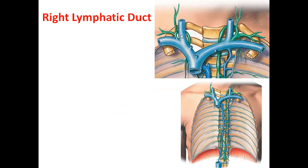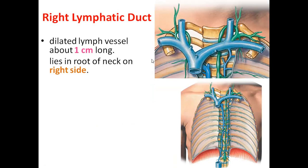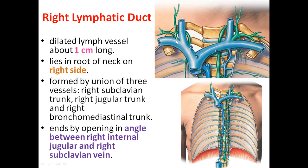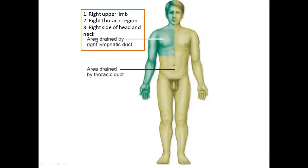The right lymphatic duct is a dilated lymphatic vessel about 1 centimeter long. It lies in the root of the neck on the right side. It is formed by the union of three vessels: the right subclavian trunk, the right jugular trunk, and the right bronchomediastinal trunk. It ends by opening at the angle between the right internal jugular vein and the right subclavian vein.